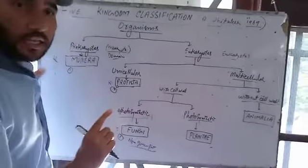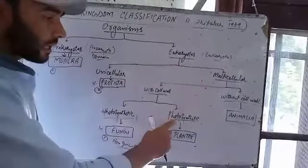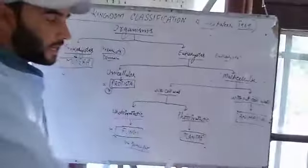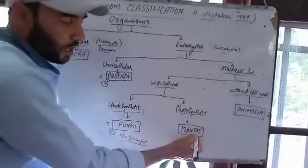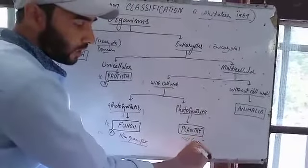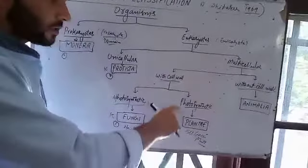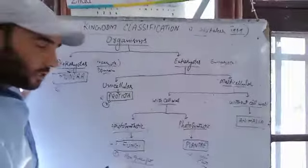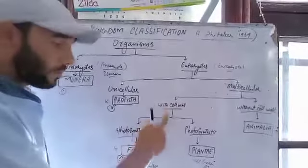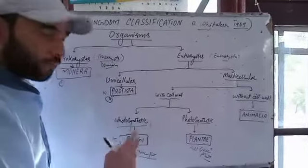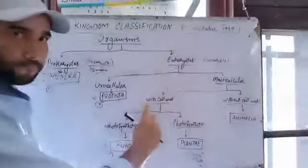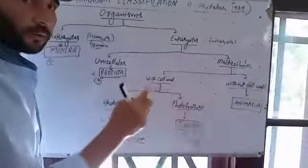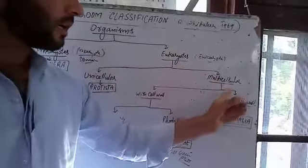Fungi are not green in color and do not perform photosynthesis. The other group is photosynthetic — they can prepare their own food and have a cell wall. These are plants — Kingdom Plantae. Both Plantae and Fungi are eukaryotes with cell walls. The difference is that fungi are non-photosynthetic while plants are photosynthetic.